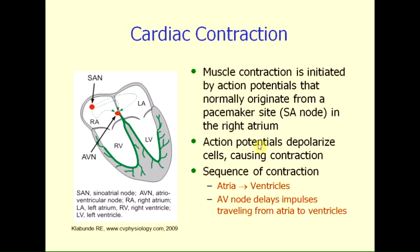Cardiac contraction is initiated by action potentials that are generated by the sinoatrial node, which is located in the upper posterior wall of the right atrium. The depolarization of these cells causes a wave of electrical activity to sweep across the atria and then down into the ventricles, and this electrical activity causes the muscle cells to depolarize, which then initiates contraction.